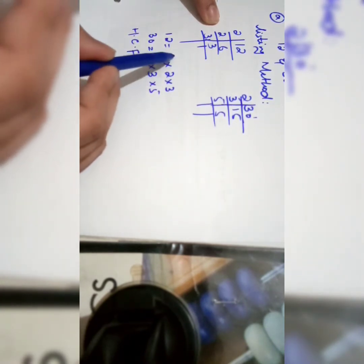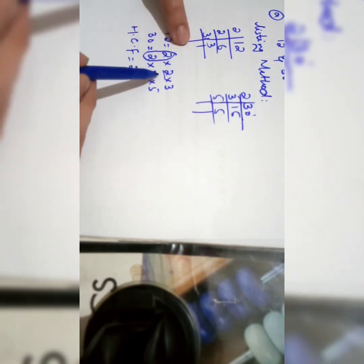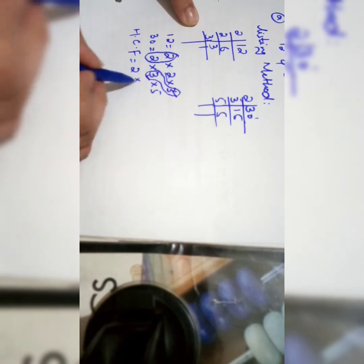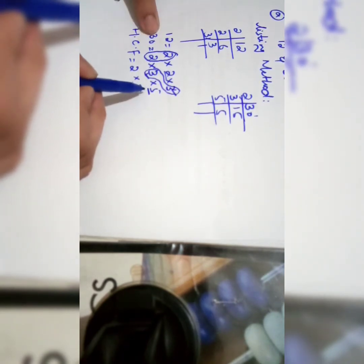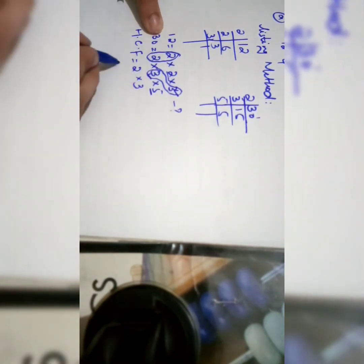Factors of 30 are 2 multiplied by 3 multiplied by 5. Now find the HCF by taking the common factors. One common factor is 2, present in both terms. Then 3 is also common to both. The number 5 appears only in factors of 30, not in factors of 12, so it is left out as uncommon. Multiply the common factors: 2 times 3 equals 6. So the HCF is 6.